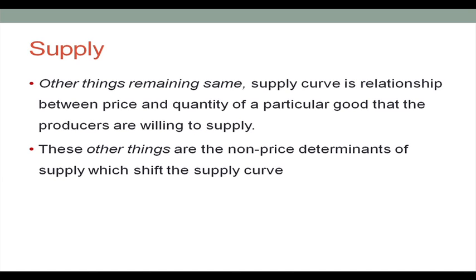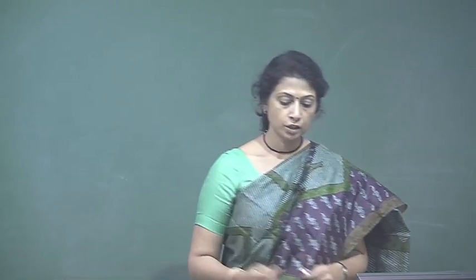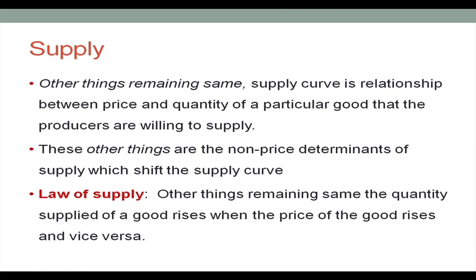Those other things are the non-price determinants of supply, which shift the supply curve. The supply curve follows the law of supply: other things remaining the same, the quantity supplied of a good rises when the price of the good rises, and vice versa. When price increases, the producer is more interested in selling the product.